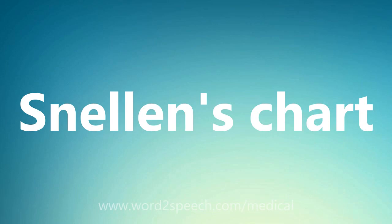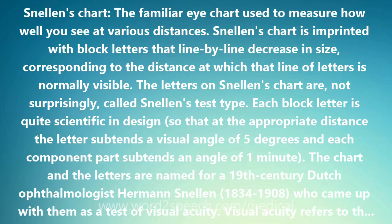Snellen's chart: the familiar eye chart used to measure how well you see at various distances. Snellen's chart is imprinted with block letters that line by line decrease in size, corresponding to the distance at which that line of letters is normally visible.